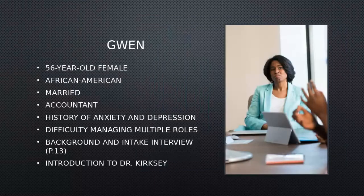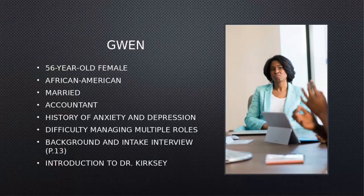Then there's Gwen, who's a 56-year-old African-American female. She's married and she's an accountant. She has a history of anxiety and depression and comes to therapy for difficulties managing her multiple roles and some job stress. You can take a look at Gwen's background and intake interview on page 13 of your book, and you'll also get an introduction to Dr. Kirksey, who was her therapist.